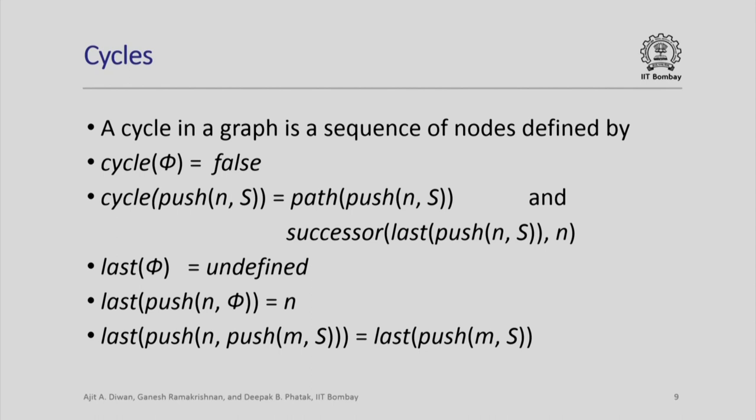Another very useful concept in a graph is that of a cycle — again a sequence of nodes defined similarly. If it is empty it is not a cycle. If it is non-empty it must be a path, and the additional condition is that the last element of the sequence must be a successor of the first element. That is, successor(last(push(n, s)), n) must be true — the first element n must be a successor of the last element of the sequence. Here, last is a function that returns the last element in a sequence.